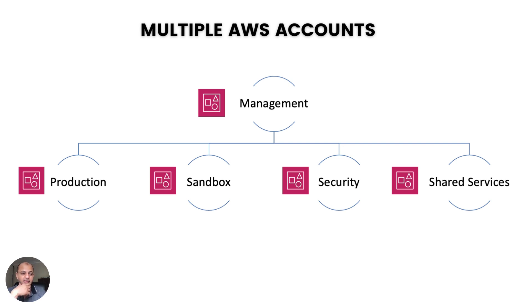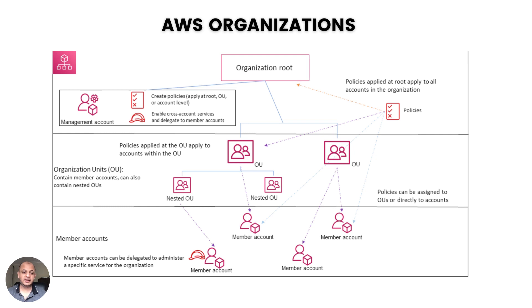Then you have a security account used by the cybersecurity team with access to logs and other security services. Then you have a shared services account that follows a hub-and-spoke model — for services used across accounts like storage of logs and networking. This becomes very complex and a nightmare to manage. So we have a service called AWS Organizations. Just to show you how complex it becomes — that's the diagram.